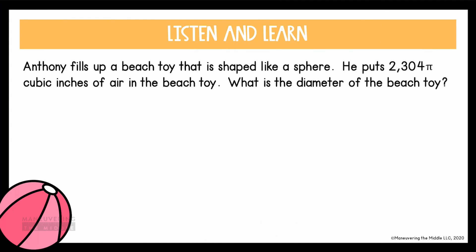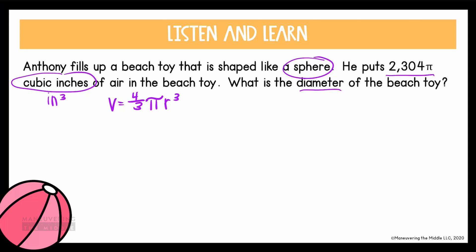Here it says Anthony fills up a beach toy shaped like a sphere. He puts 2,304 pi cubic inches of air in it. What is the diameter of the beach toy? We know we're talking about a sphere and about volume, because anything in cubic units is volume. We're looking for the diameter. Since we know the sphere volume formula, let's start there. The volume equals 4 thirds pi r cubed. We substitute the given volume — 2,304 pi — in place of v, then write the rest of the formula.